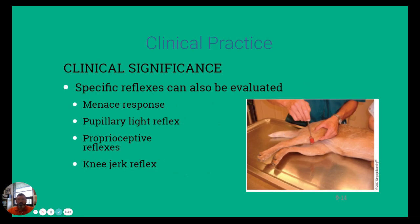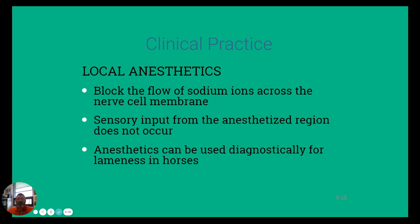Specific reflexes can also be evaluated — there's an image here of a reflex test on a dog to check if the leg is functioning properly, that knee-jerk reflex. Local anesthetics, whenever surgery or treatment is required, can help block nervous system flow so the patient doesn't feel pain. They also help with diagnostics if you need a muscle or limb to remain still, allowing you to anesthetize it and examine it more carefully.